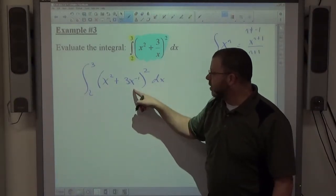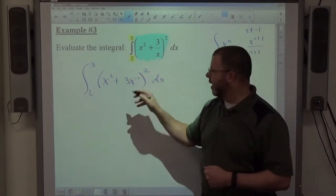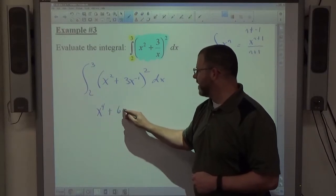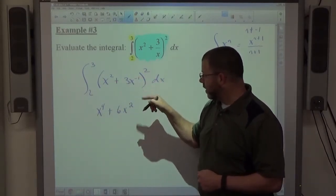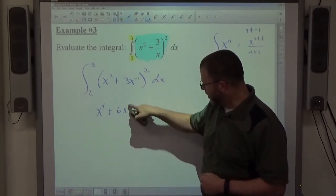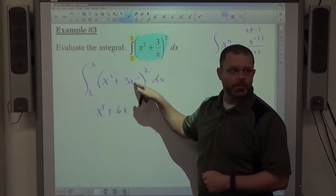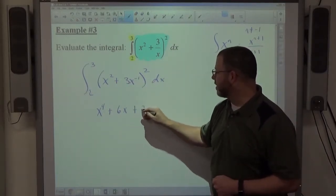But notice that this is not what we're integrating, we're integrating this to the second power. So now, if I go ahead and square this binomial, I'm going to get x to the fourth plus 6x to the first. If I multiply these together, I get 3x to the first, double it, I get 6x to the first. And if I square the second, I'm going to get plus 9x to the negative second.